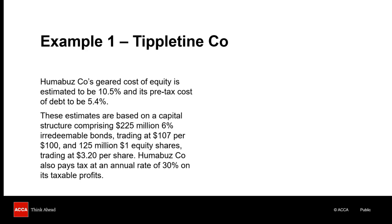That means the proxy company's ungeared cost of equity will be identical to Tipleton Co's ungeared cost of equity. Remember, the ungeared cost of equity removes the effect of financial risk from the cost of equity and provides a measure of just business risk. So let's break down the information candidates were presented with in the exam.